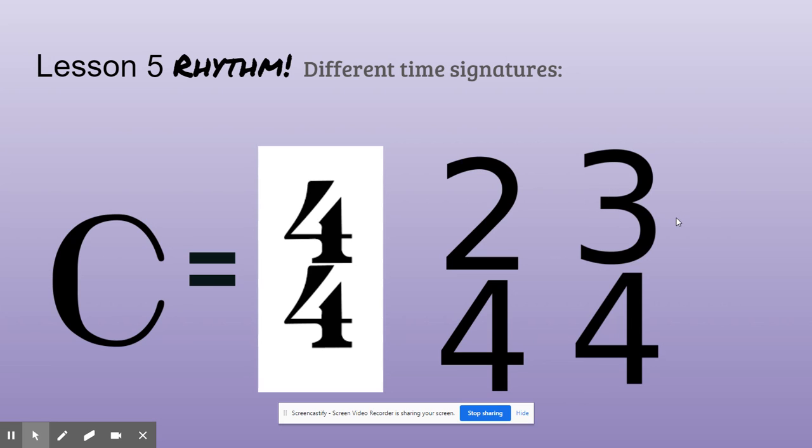And believe it or not, there are more time signatures than just this. There is a 6-8 time signature. There could be a 12-8 time signature. But let's not get ahead of ourselves. Let's just worry about right now, anytime there's a 4 on the bottom, that quarter note gets the beat.